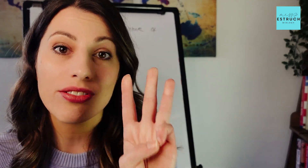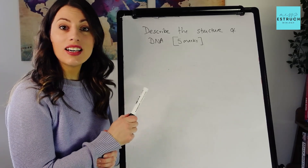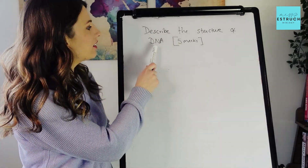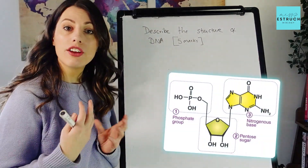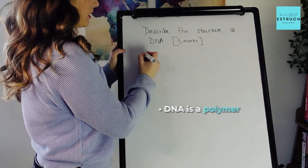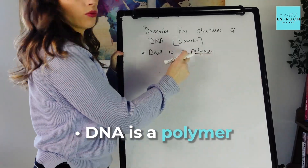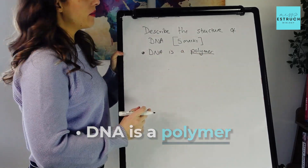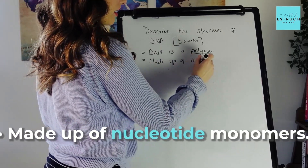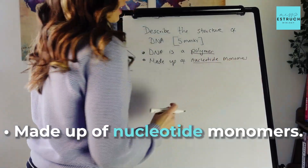Now the bit I said to hang around for — I'm going to be going through three five-mark questions. Grab yourself a pen and paper, join in with me and I'm going to be doing it on the whiteboard. It's five marks so we're going to aim for six bullet points. It doesn't actually specify if it wants the nucleotide or the overall polymer structure so I'm going to talk about both. The first thing I'm going to point out is DNA is a polymer — that's one of the key marking points — and it's made up of nucleotide monomers.